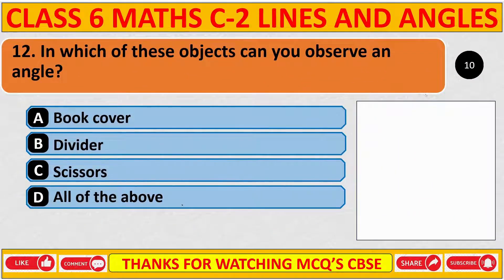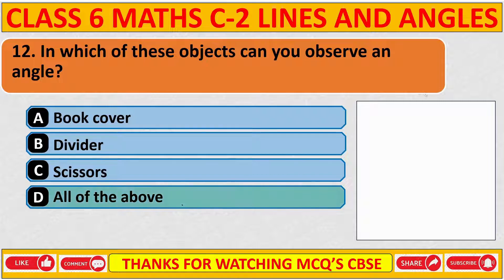In which of these objects can you observe an angle? The correct answer is B: all of the above — book cover, divider, scissor. In all these objects, we can see an angle.